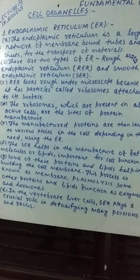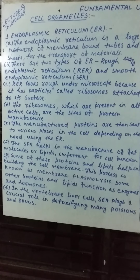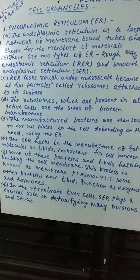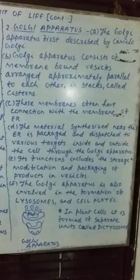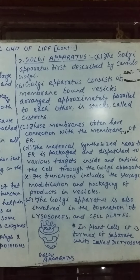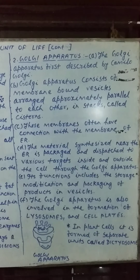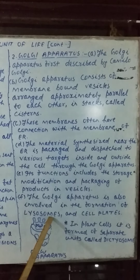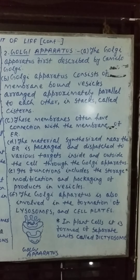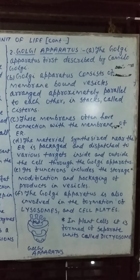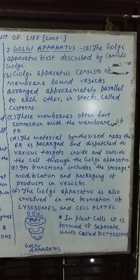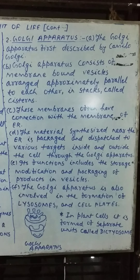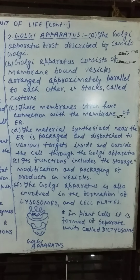Next question: what would happen to the life of the cell if there was no Golgi apparatus? The answer may be: there would be no lysosome, because the Golgi apparatus is responsible for the formation of lysosomes. There would be no intracellular digestion, no complexing of molecules, no excretion, and no formation of new plasma membrane.